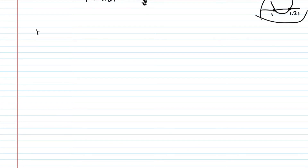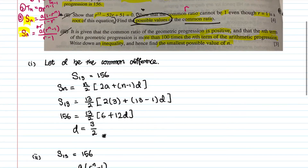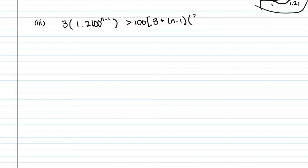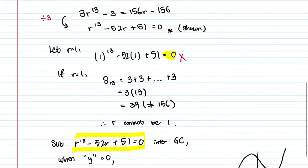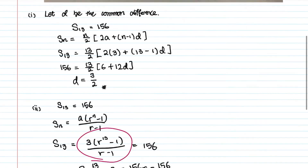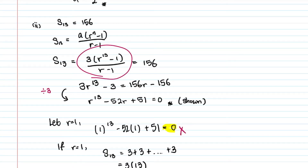Part three: it is given that the common ratio of the GP is positive, and the nth term of this GP is more than 100 times the nth term of the AP. Write down an inequality and find the smallest possible value of n. Since r is positive, use r≈1.21. The nth term of the GP is 3×1.21^(n−1), and the nth term of the AP is 3 + (n−1)×(3/2).